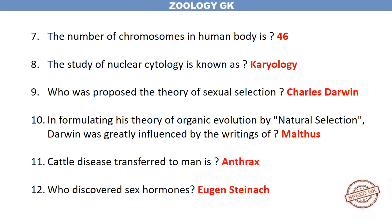Who proposed the theory of sexual selection? Charles Darwin. In formulating his theory of organic evolution by natural selection, Darwin was greatly influenced by the writings of Malthus.